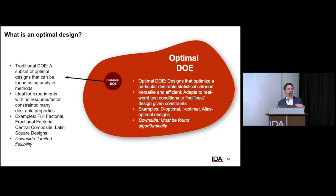However, when the types of constraints we mentioned earlier are present, there's usually no pen-and-paper way to find which design is best. We have to resort to looking for designs using computational methods — algorithms — which is what optimal DOE allows us to do. We also have different statistical criteria — different statistical goals we can achieve. Sometimes you want to optimize for a specific purpose. For example, if you wanted to design a test for minimal prediction variance — to find a sweet spot in your operational test environment — you'd want to use an I-optimal design, which minimizes the average prediction variance across the space.